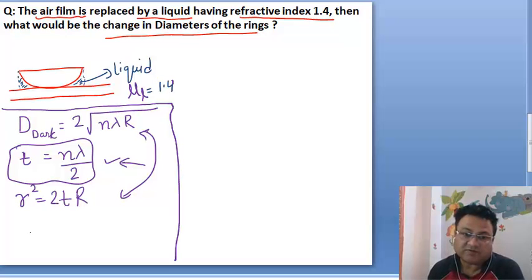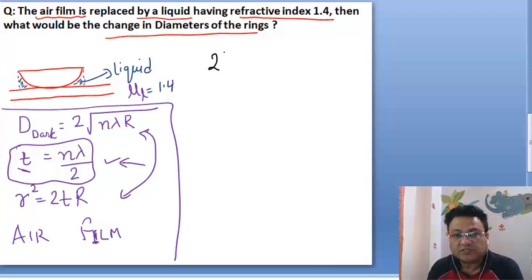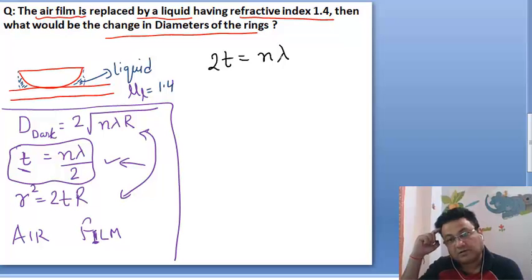In these formulas, because our film was air film, in Newton's film we have dropped the mu. So I will see this formula: twice of t equals to n lambda.